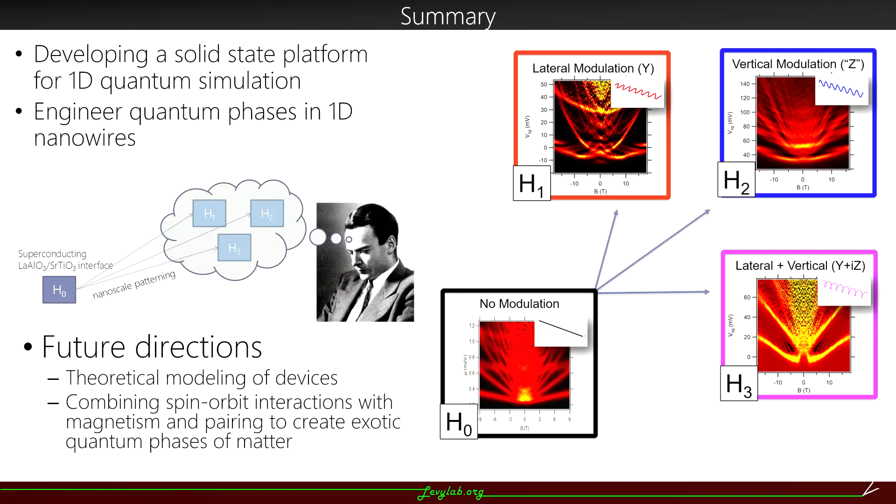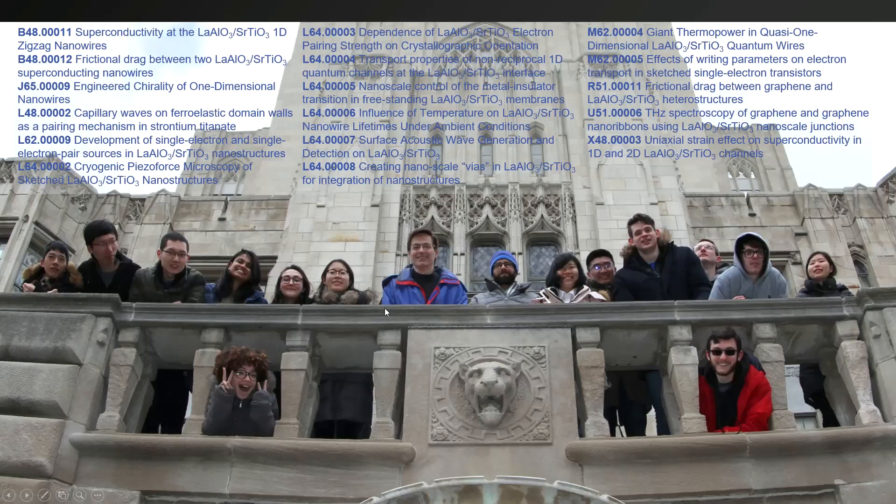So in summary, we are developing a solid state platform for 1D quantum simulation from the complex oxide heterostructure LAO-STO. And we wish to engineer quantum phases in 1D nanowires formed at that interface. So future directions will consist of further theoretical modeling of the devices and work to try to improve the reproducibility of them. So thank you for your attention. I'd like to also thank many members of our group here. And I also show a list of other talks that you can go listen to. Thank you.